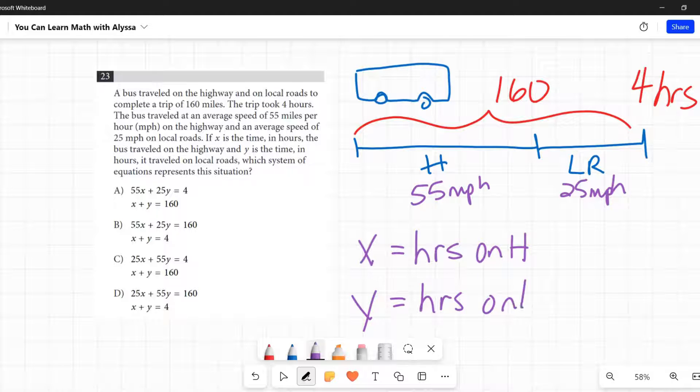Which system of equations represents this situation? First, before I even look at these options in detail, I'm going to look at them generally. I see that each one has an equation that involves 25 and 55 being multiplied by x and y. So okay, there's my miles per hour coming in. Some of them are adding up to 4 and some are adding up to 160. Then I've got these x plus y's, and two of them are equal to 4 and two are equal to 160.